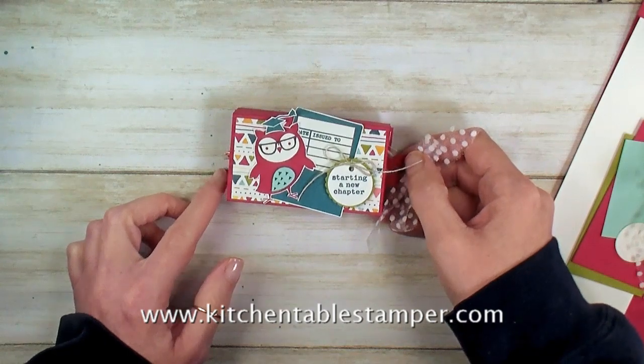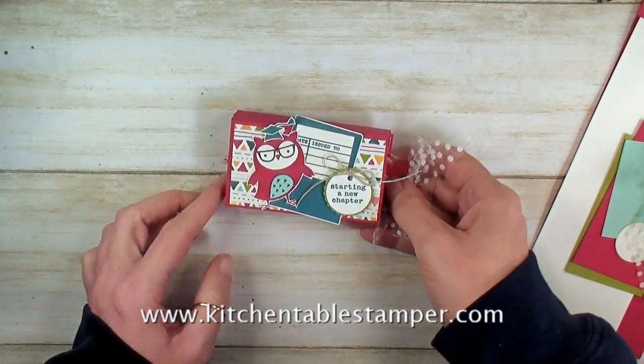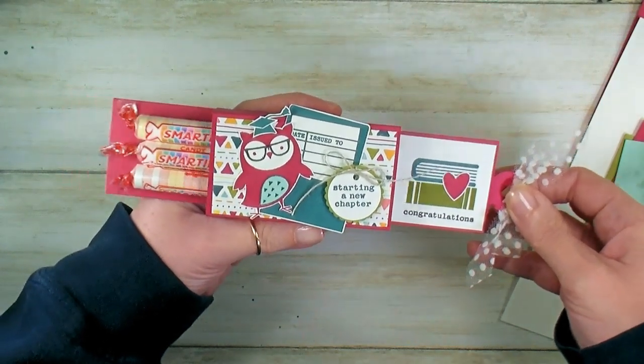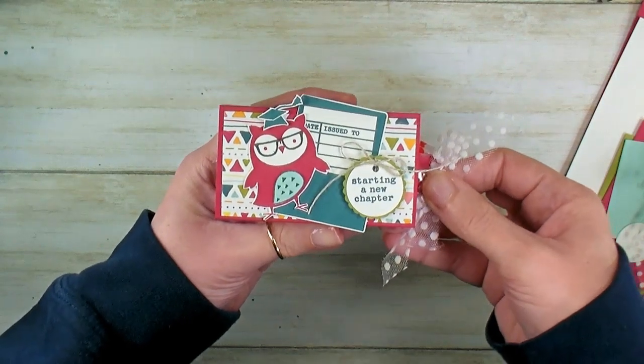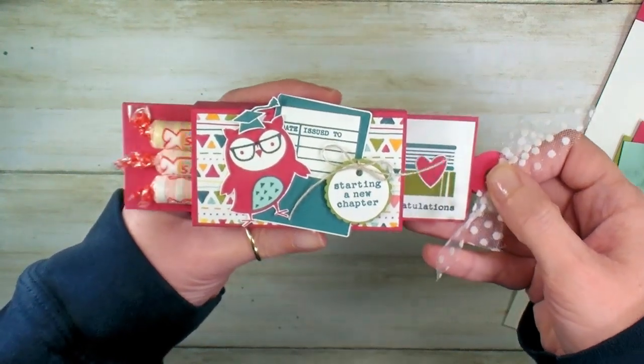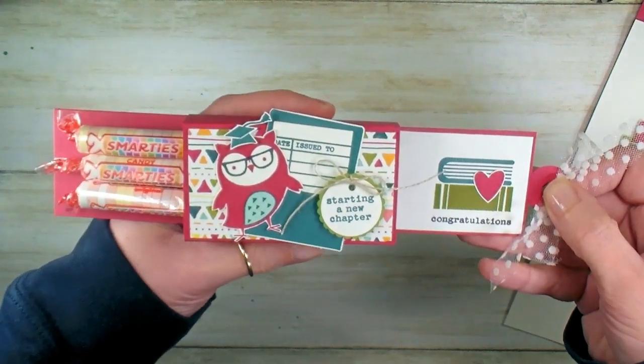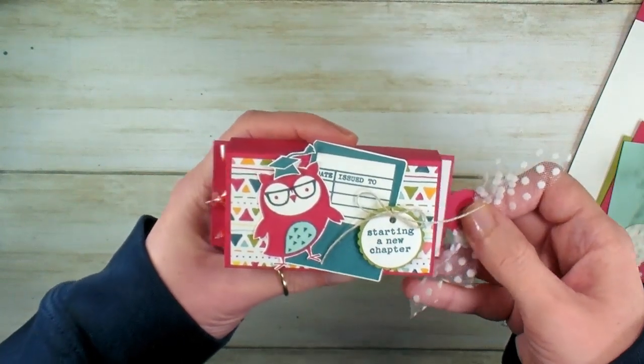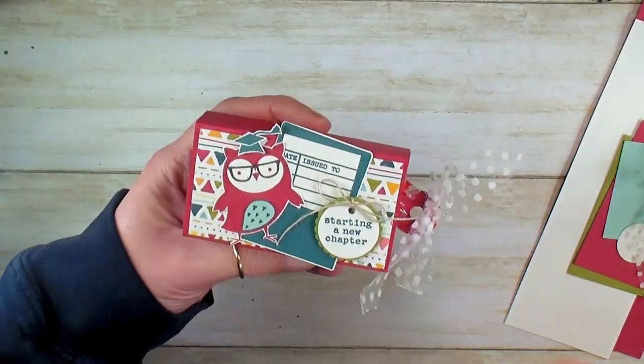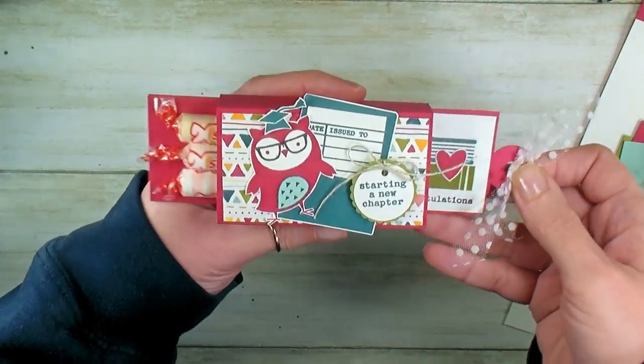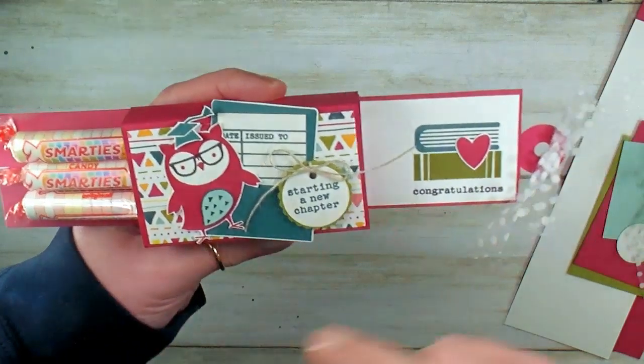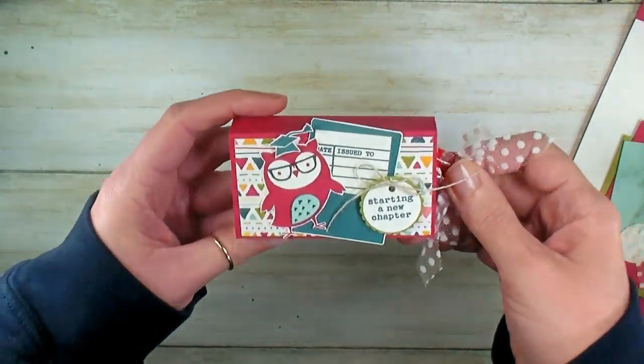Hey guys, it's Marissa at KitchentableStamper.com. On the Kitchentables Craft Social, we've been making these fun little sliders for small candies and gift cards. One of my friends designed a box for Smarties. With graduation season here, I thought this would be a whole lot of fun. We've got our graduate owl to go with our Smarties candies, and let's get started with this box.